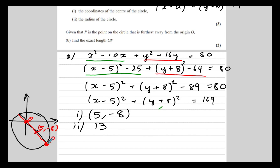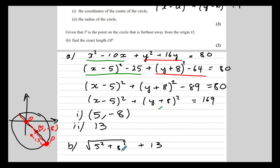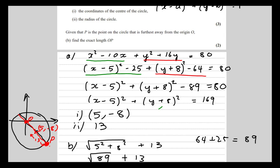The origin is at (0, 0), and the distance from the center to P is the radius, which is 13. We can use Pythagoras to find the distance from O to the center, then add on 13. Square root of 5 squared plus 8 squared: 8 squared is 64, 5 squared is 25, so 64 plus 25 is 89. So the length OP is 13 plus square root of 89.